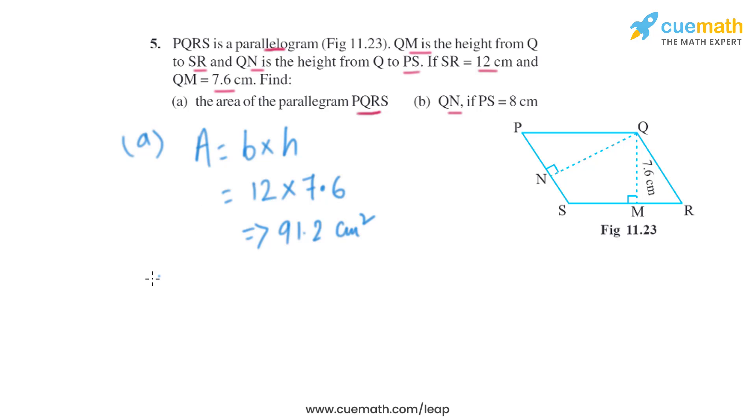Now in part B, we have to find the length of QN if PS is given as 8 cm. We know the area of the parallelogram is 91.2 square centimeters, and when we take the base as PS, area equals base into height. This time we are taking the base as PS, so QN will be the height.